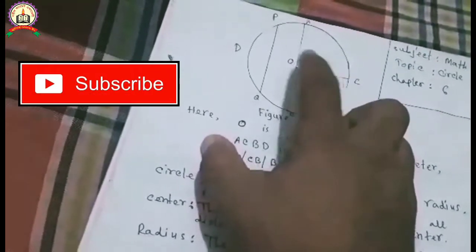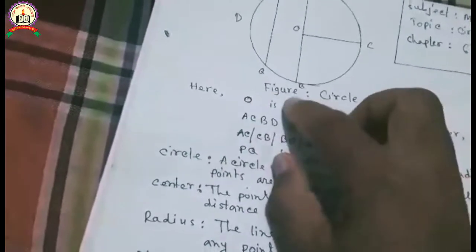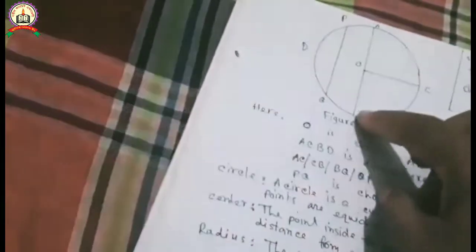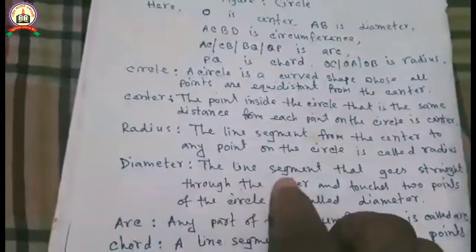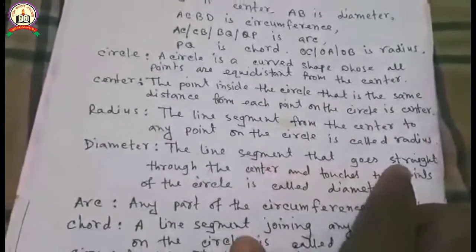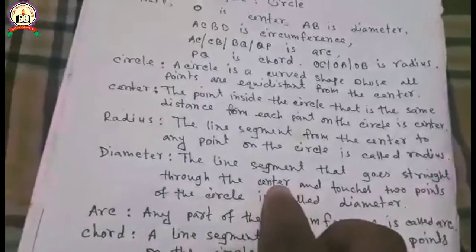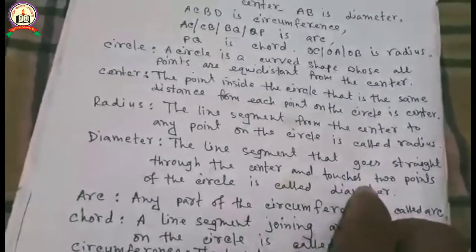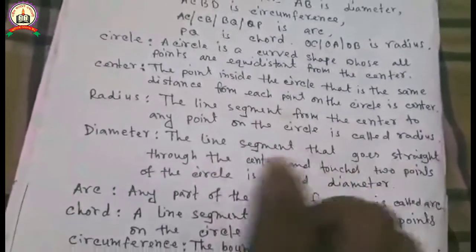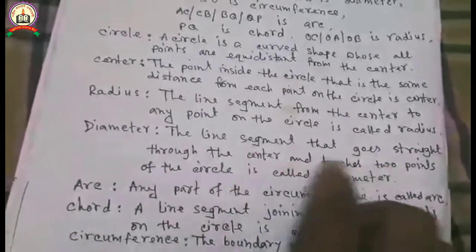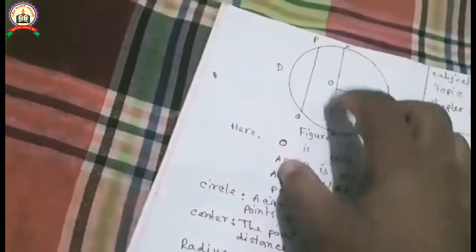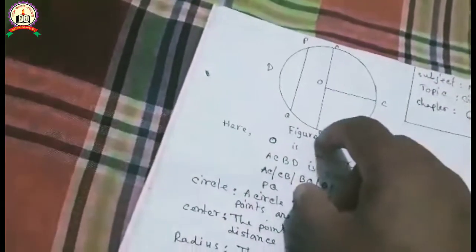OC, OA, or OB are each a radius. Then, diameter. In the figure, AB is a diameter. The line segment that goes straight through the center and touches two points of the circle is called diameter. This line segment goes through the center and touches two points, so it is diameter.